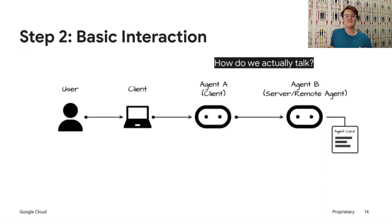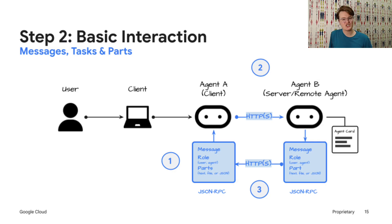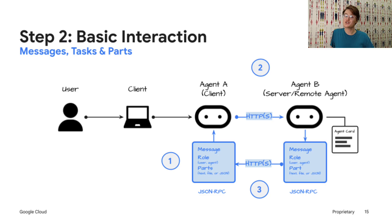Once Agent A found Agent B, how do they actually talk? A2A uses standard HTTPS for secure communication. The envelope for their messages is JSON RPC 2.0, a simple way to call functions on a remote server. Inside these JSON RPC messages, we have key A2A objects. A message represents one turn in the conversation, like Agent A asking a question — it has a role (user or agent) and contains parts. A part is the actual content: it could be plain text, a file, multimodal, or structured JSON data.